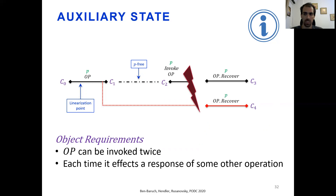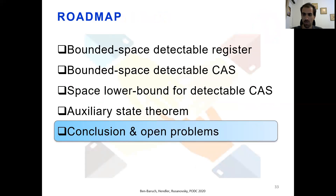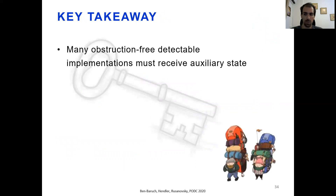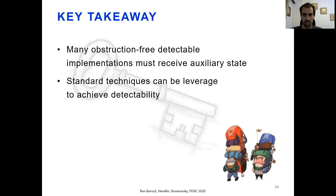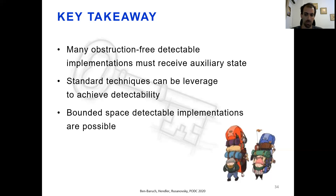This construction can be applied to objects such that the same operation op can be invoked twice by process P, and such that each instance of op affects the response of some other operation. We call such an object a doubly perturbing object. To conclude: we have shown that for many objects, any obstruction-free detectable implementation requires a model with auxiliary state, either supplied by the calling process or by the system. We show that standard techniques such as handshake and vector bits, originally designed to solve concurrency issues, can be used to achieve detectability as well. We believe more known tools can be used in the crash recovery setting to achieve detectability, and we show that detectable implementations with bounded space are possible.